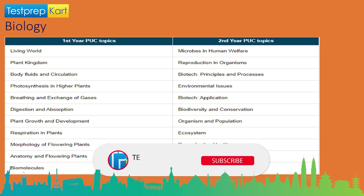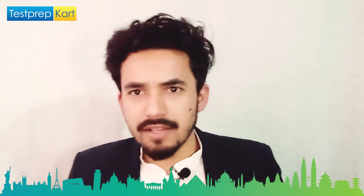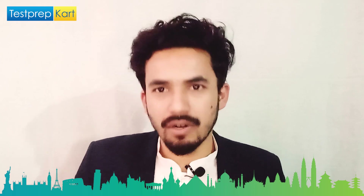Biology also plays an important role for biology-related courses. Class 11 topics include the living world, plant kingdom, body fluids and circulation, breathing and exchange of gases, digestion and absorption, plant growth and development, respiration in plants, morphology of flowering plants, anatomy of flowering plants, biomolecules, cell cycle and cell division, locomotion and movement, and excretory products and their elimination. Class 12 topics include microbes in human welfare, reproduction in organisms, biotechnology principles and processes, environmental issues, biotechnology applications, diversity and conservation, organisms and population, ecosystem, reproductive health, and evolution — totaling 60 questions from Biology.